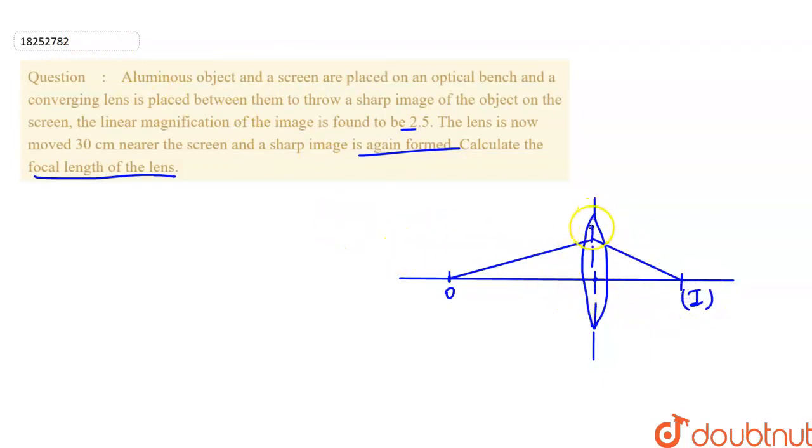After that, the lens is shifted. It is 30 cm nearer to the screen. So the lens is shifted. Finally, the lens is like this and the distance is 30 cm. And the sharp image is again formed. So the object is here.